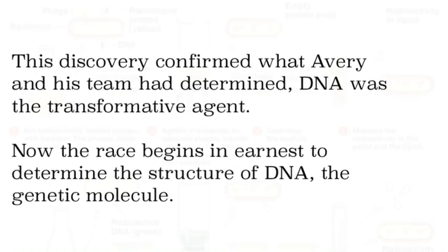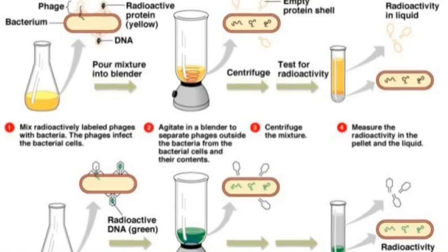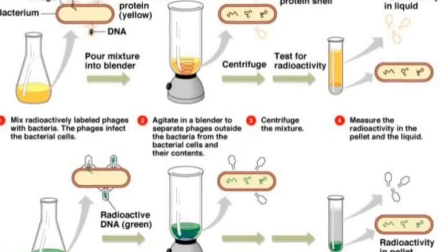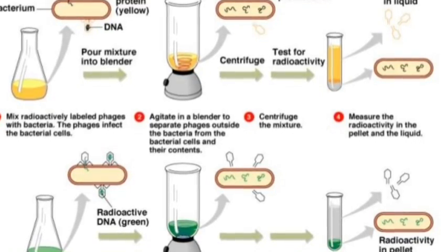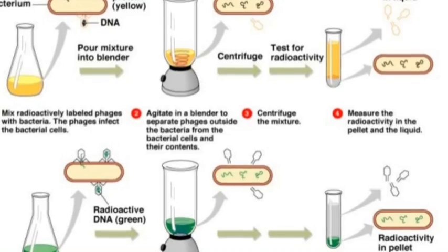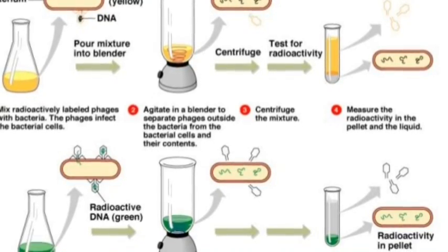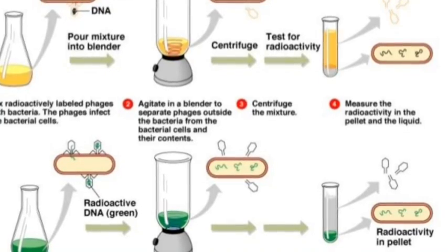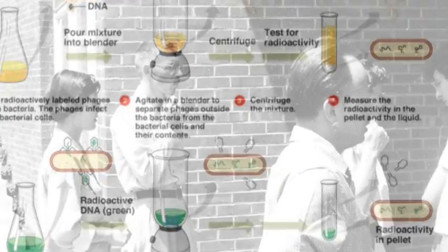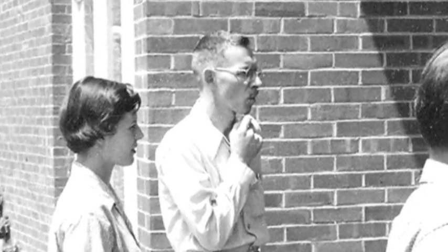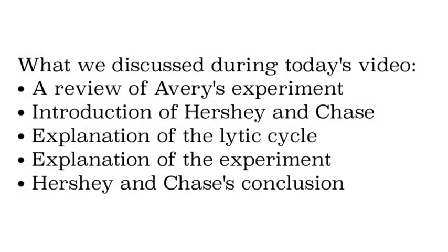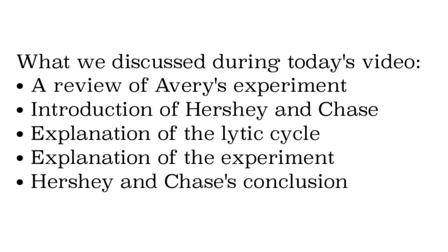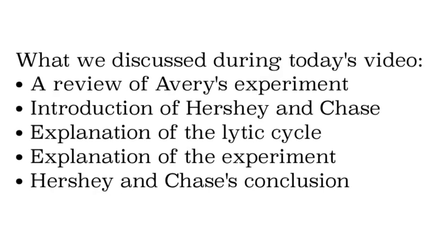This really reinforced what Avery found out and started the race for the structure of DNA. To review: they had two solutions — one with radioactive phosphorus, one with radioactive sulfur — infected E. coli, let the virus reproduce, put it in a blender to throw the protein coats into the liquid, then centrifuged it. The DNA sank into the pellet, showing it had entered the cell, which was definitive proof it was the transformative agent. Hershey and Chase basically settled the argument once and for all.